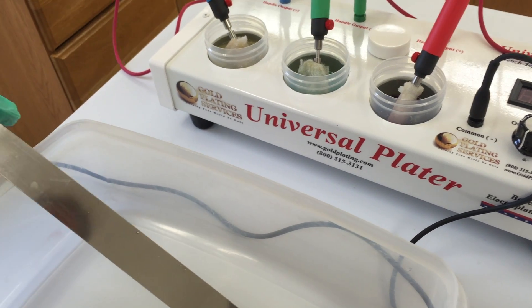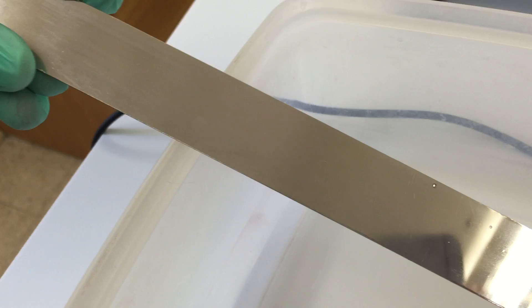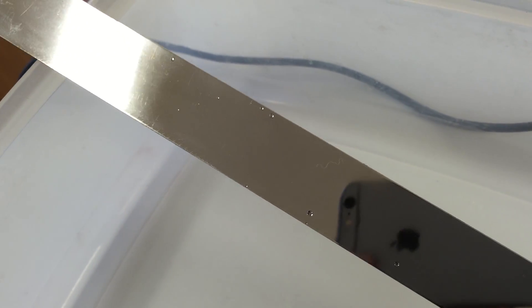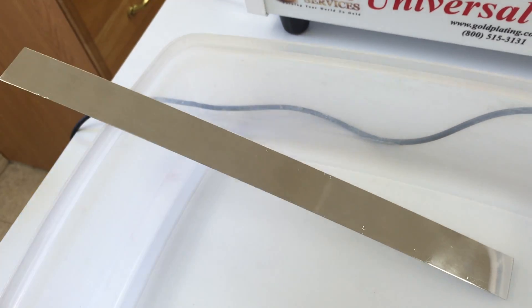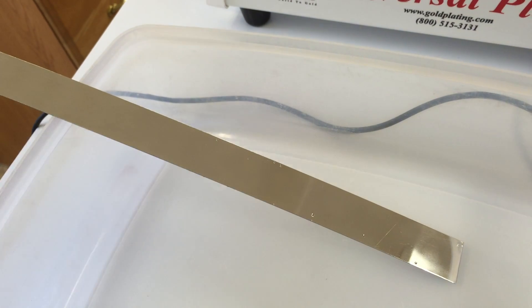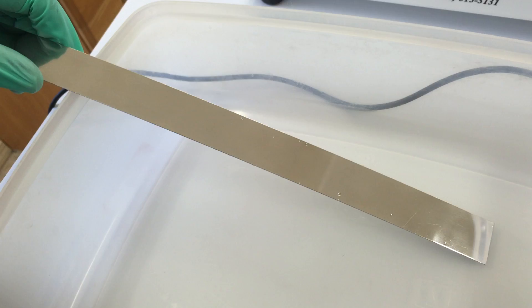Over here we have the piece we're going to be doing, which is a 316 stainless steel. It's a polished stainless steel finish. And this is one of the hardest stainless steels to plate, the 316. So if you can do this, then you can pretty much do any steel, and this is the way you would want to treat any steel item that you're going to be plating.